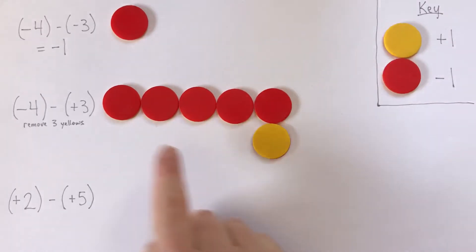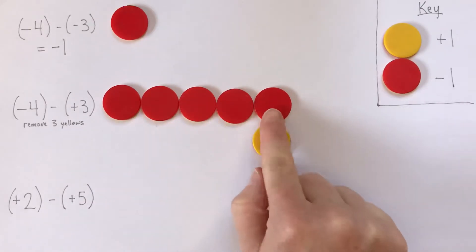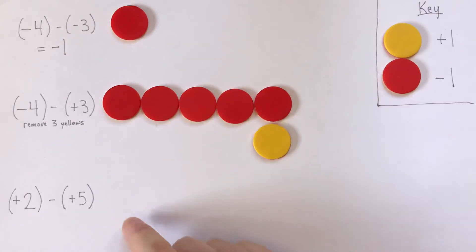So if I add a zero pair here, this is negative 1, 2, 3, negative 4. And this is worth 0. So this whole number is still negative 4.